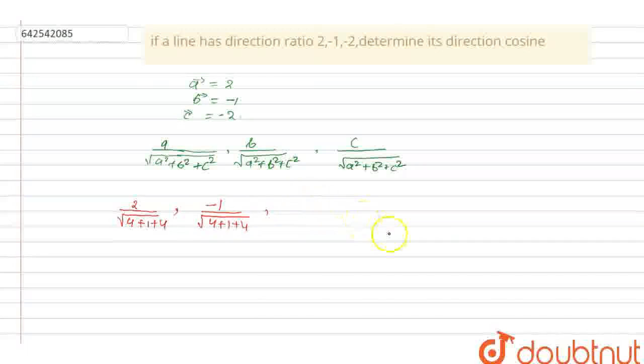And here, that is minus 2 upon under root 4 plus 1 plus 4. So this will be equal to, when we solve this, 4 plus 4, 8 plus 1 is 9. So this will be 2 by 3, and minus 1 by 3, and minus 2 by 3.